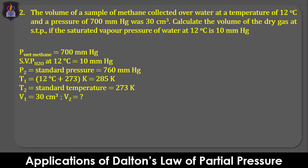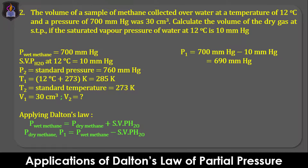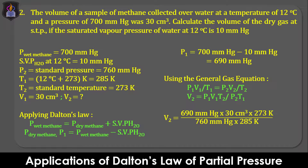Applying Dalton's Law: the pressure of wet methane equals pressure of dry methane plus saturated vapor pressure of water. Therefore, the pressure of dry methane P1 equals pressure of wet methane minus saturated vapor pressure of water, which gives 690 mmHg. Using the general gas equation P1V1/T1 = P2V2/T2 and solving for V2, we obtain 26.1 cm³ as the volume of the dry methane.